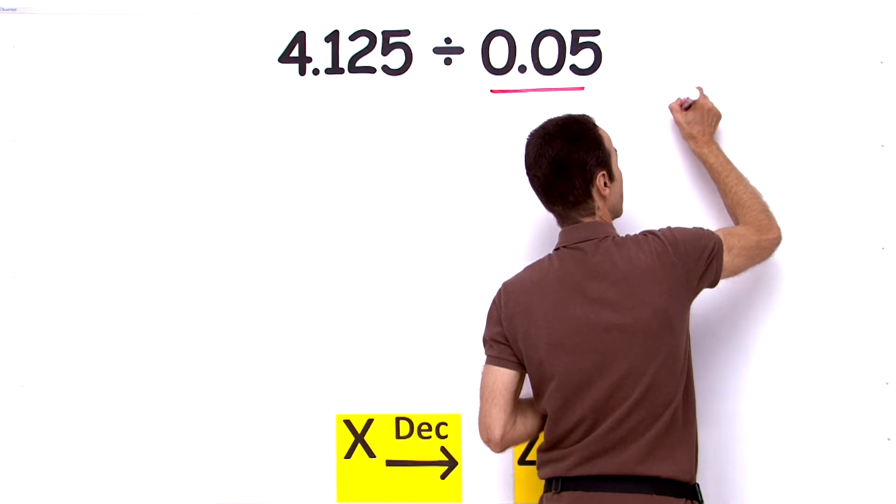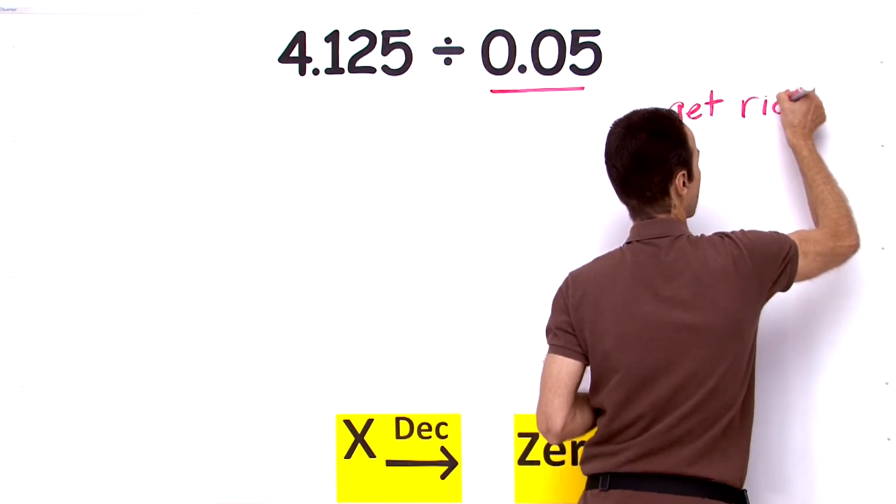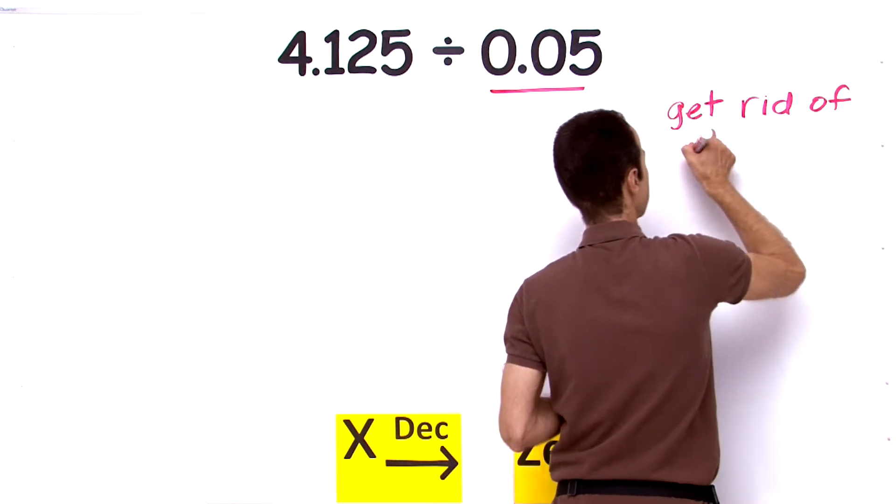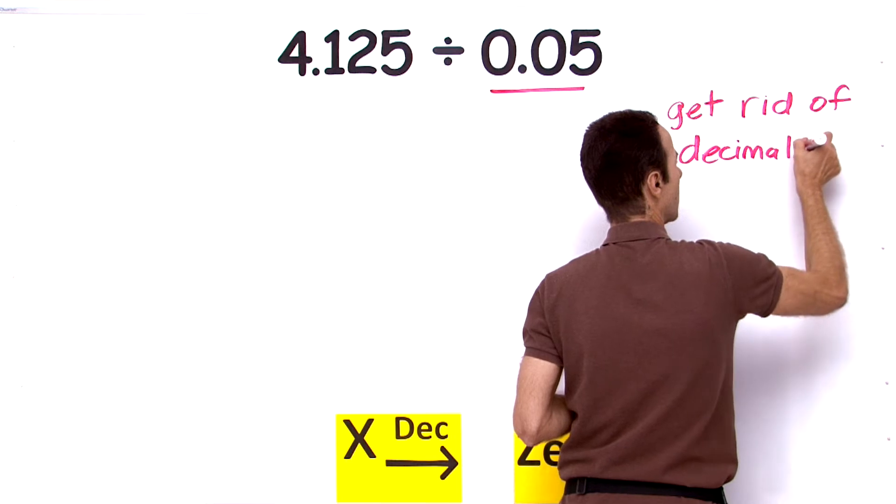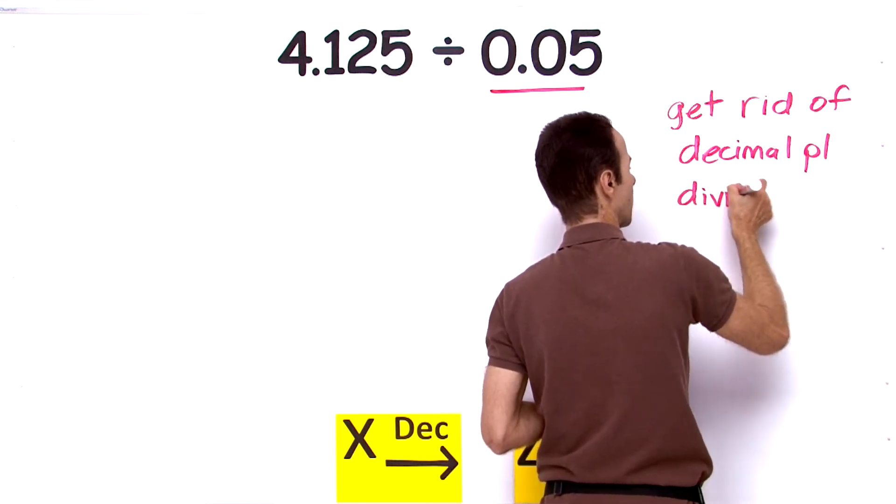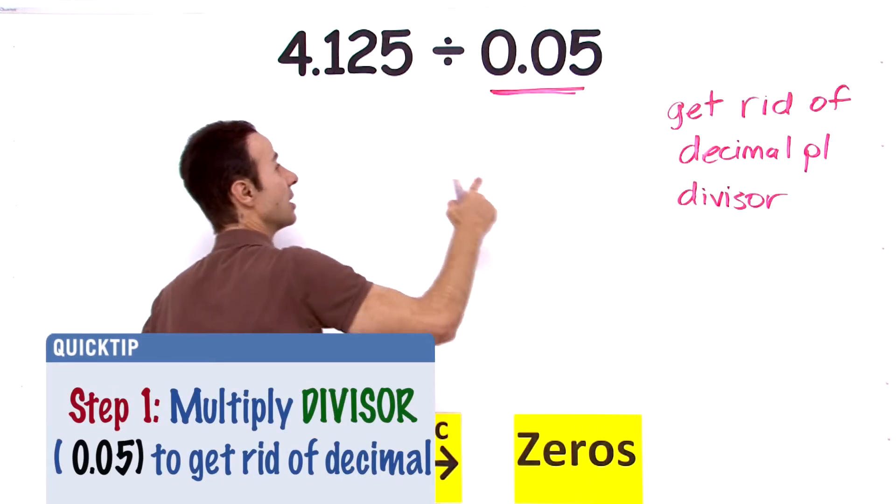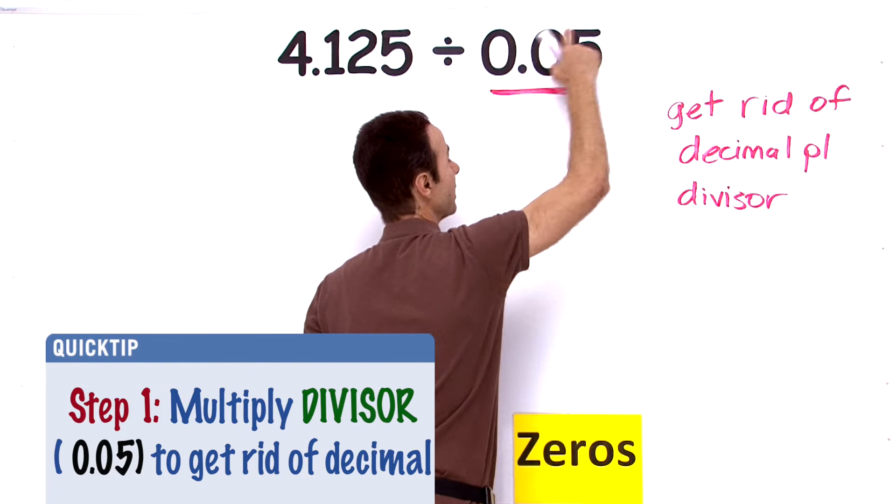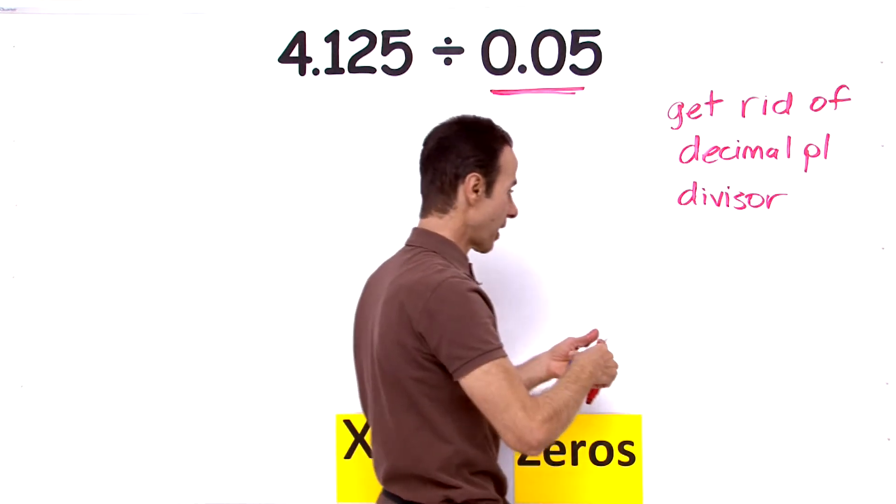So let me write that down. First, you need to get rid of the decimal place in the divisor. That is a fancy word for this number. This divides into there, so that is called the divisor. We need to get rid of that decimal place.